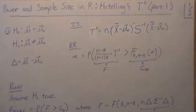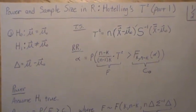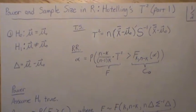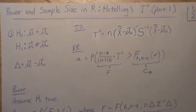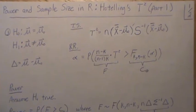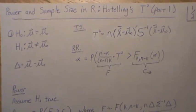Hello, this is the next video in a playlist that I call Power and Sample Size in R. And here we're going to calculate sample size for Hotelling's T-squared test, comparing multivariate mean vectors.